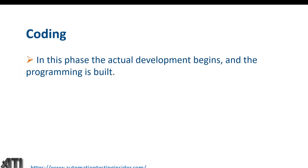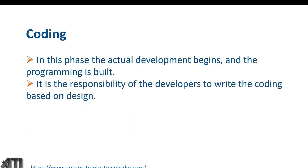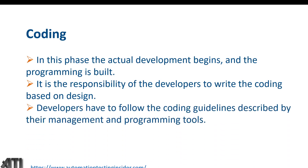In the coding phase, developers are involved. The actual development begins and the programming is built. It is the responsibility of the developers to write code based on the design the architects created. Developers have to follow the coding guidelines described by the management, using the appropriate programming tools.